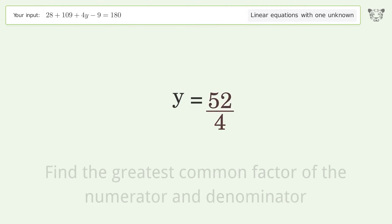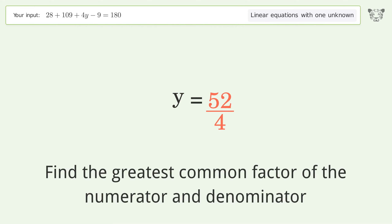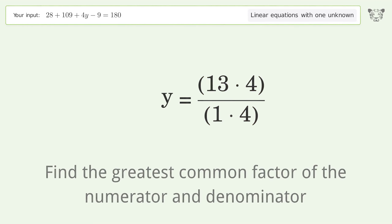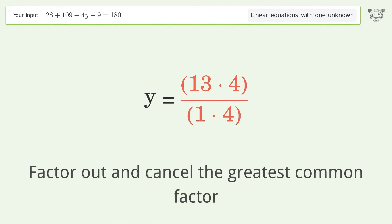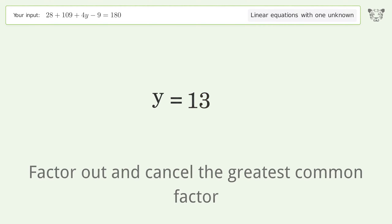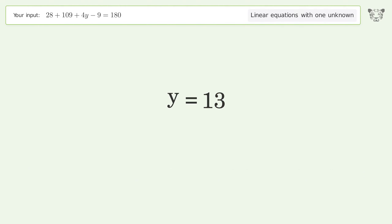Find the greatest common factor of the numerator and denominator, then factor out and cancel the greatest common factor. And so the final result is y equals 13.